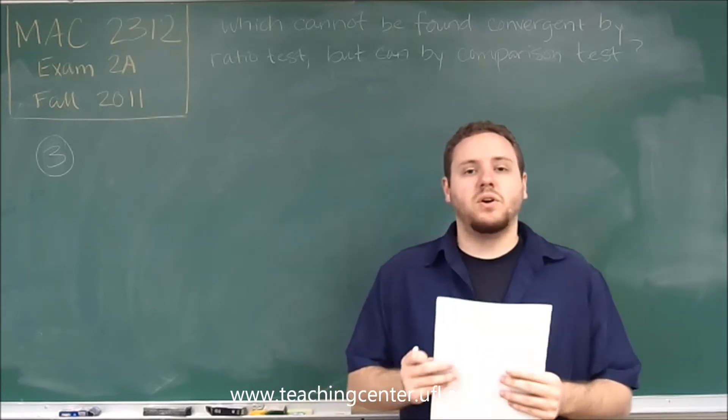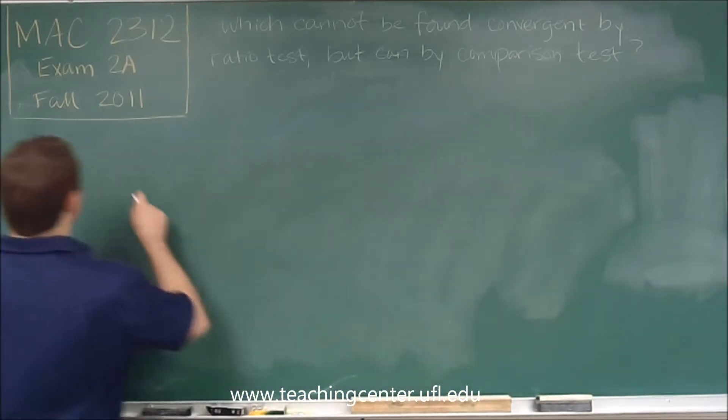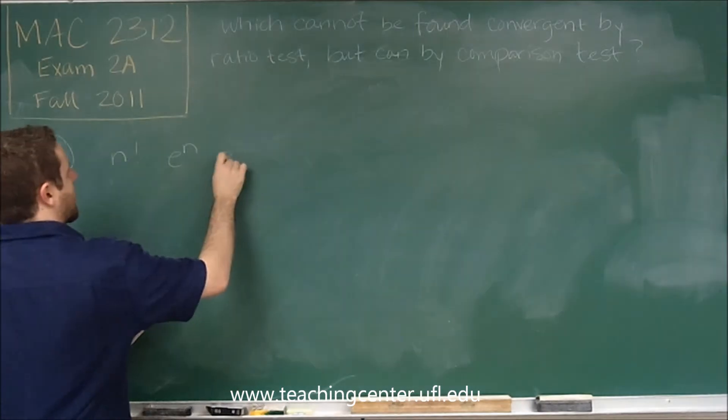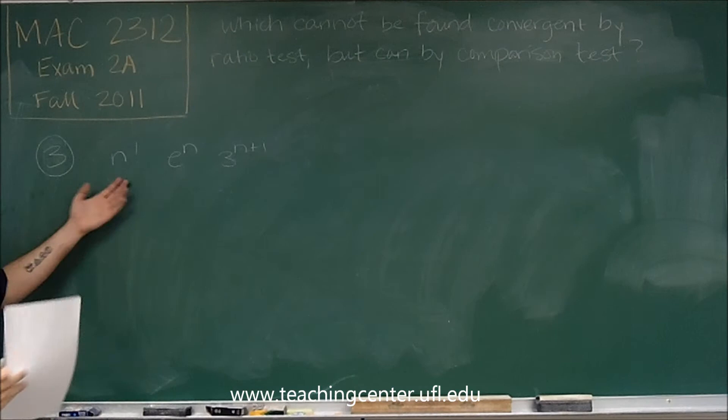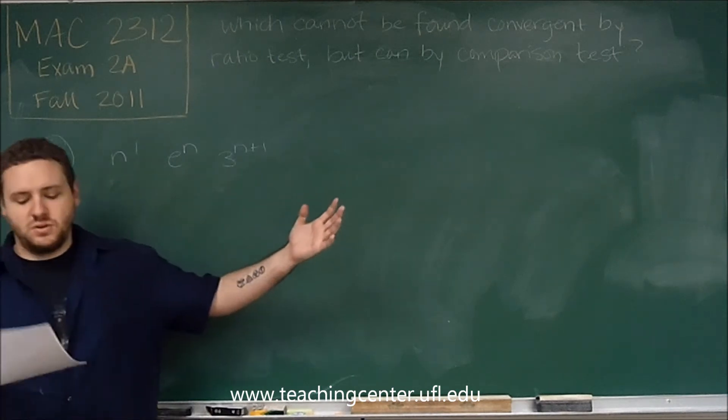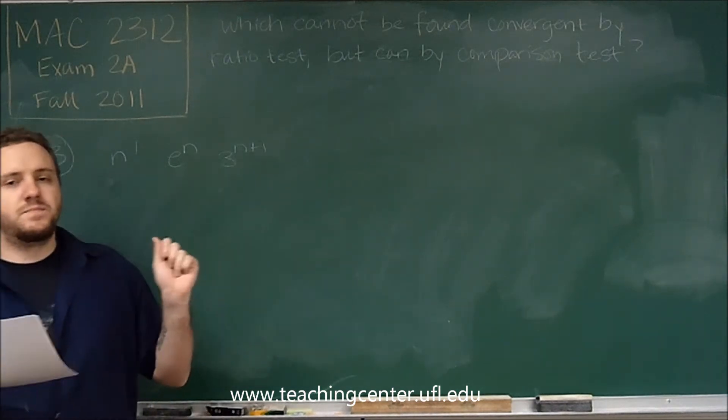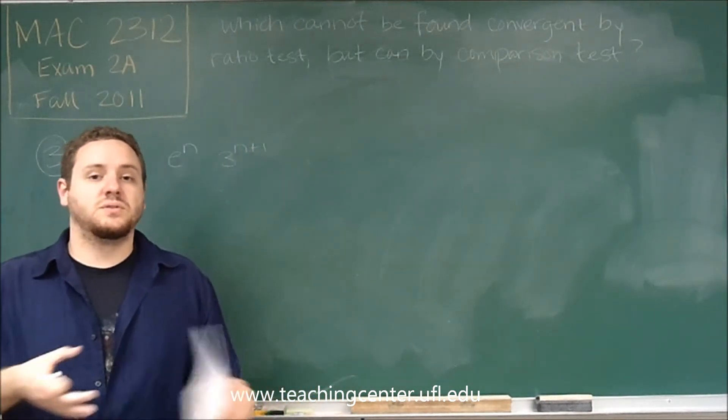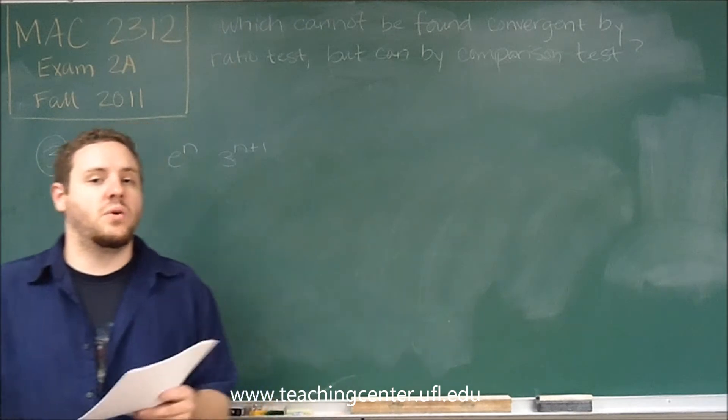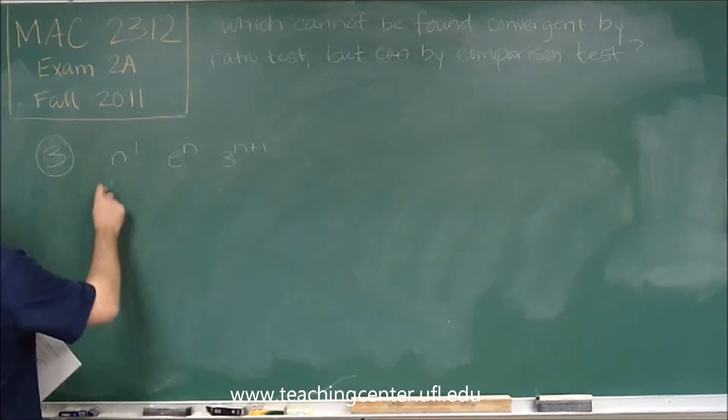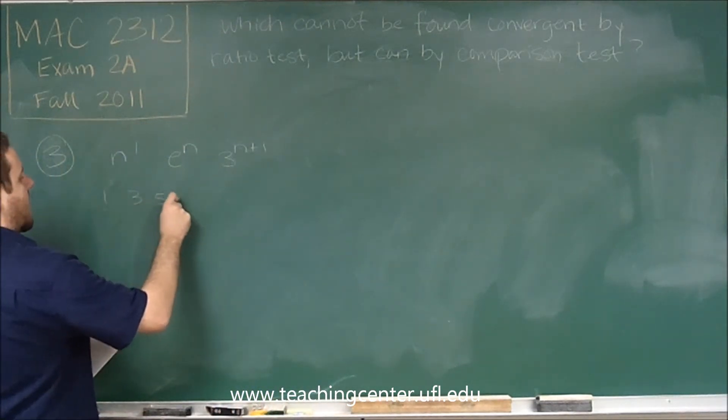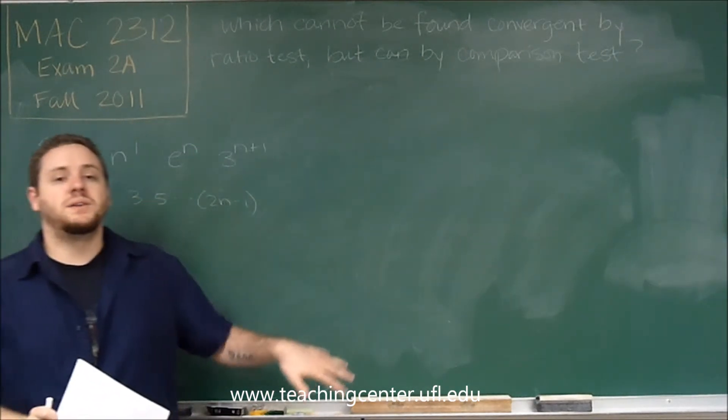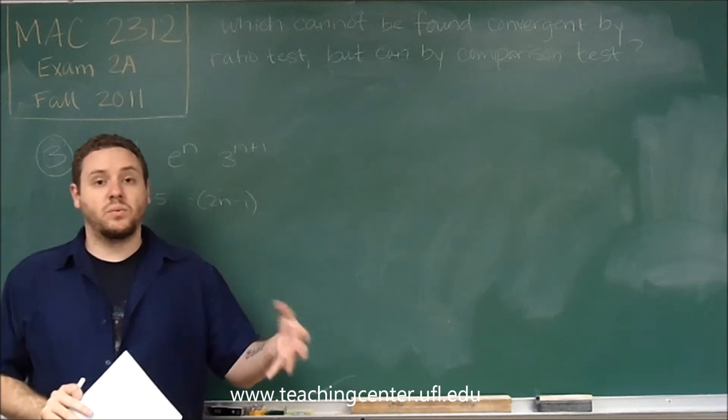Now when is that going to happen? So you might recall that for ratio tests, you are usually seeing things like this. You're seeing factorials, you're seeing exponentials, maybe you're seeing the term is eluding me at the moment, but the factorials are repeated multiplications where you don't have every single number, like maybe odds or something like that. These are all the times when you want to use the ratio test because that's when it works.